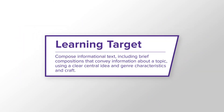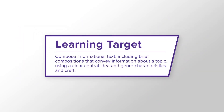If students are expected to compose informational text using genre characteristics and writer's craft, they first need to know what the characteristics of informational text are. The student expectation itself doesn't mention specifically what these characteristics are. So how do students know?